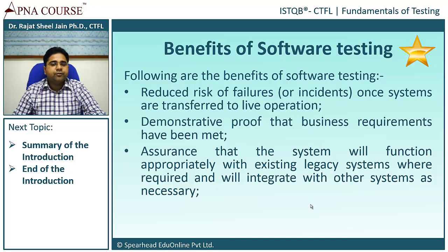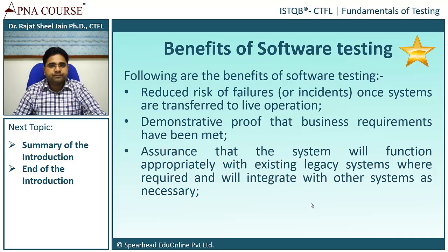For example, suppose I have to buy an insurance policy for my car. I browse the website of an XYZ company, and to issue that policy I have to go through four web pages. Once I complete those four pages, the policy will be issued to me. Suppose I am on the third page, where I submit the amount and press the submit button, but it does not navigate me to the final page that issues the policy. That would be a fault in the system — that's why we say the system must function appropriately.